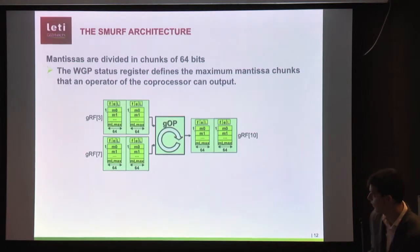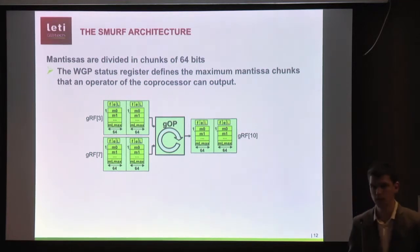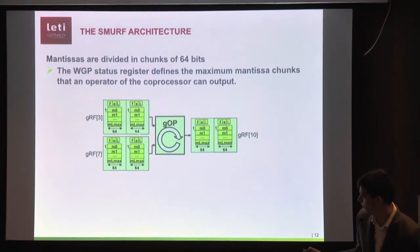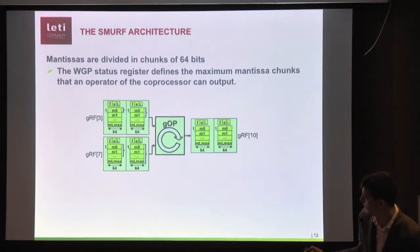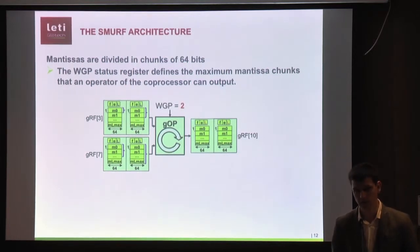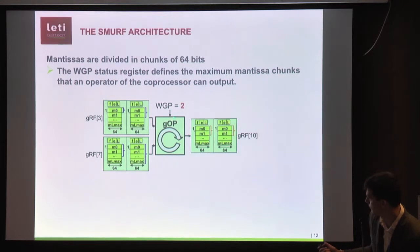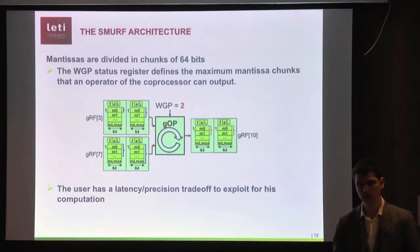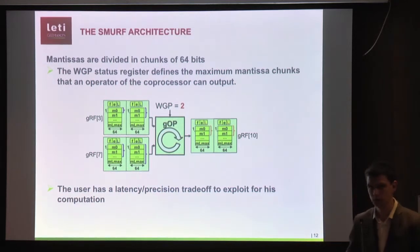The first two status registers are related to the load-and-store unit: the default and secondary UNUM environment used during load-and-store operations. We also support the WGP status register, which stands for Working Guard Precision. Basically, we may have two variables in the scratchpad with different lengths. With working guard precision, each operator outputs at most working guard precision chunks in the output — giving the user control over the latency-versus-precision trade-off during computation.